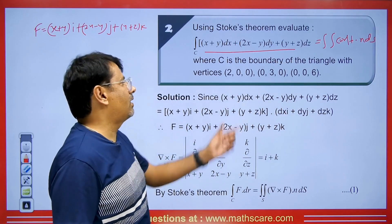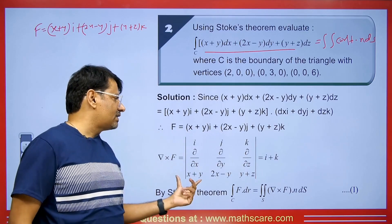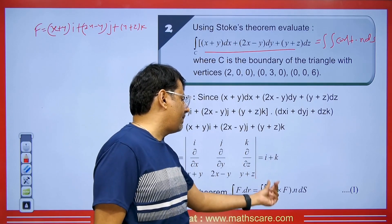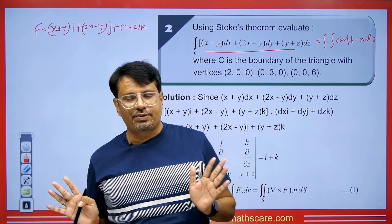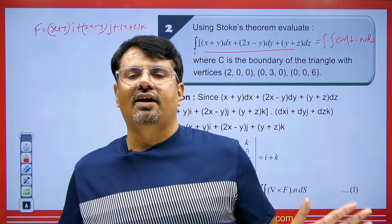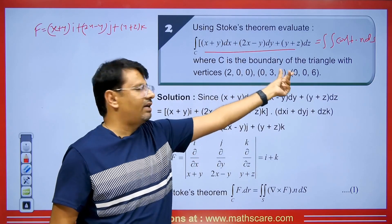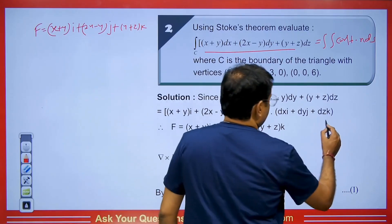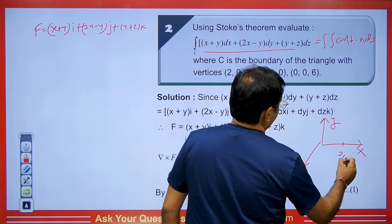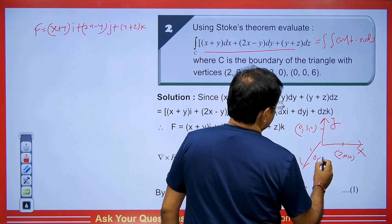We find curl f by computing the determinant of i, j, k; del/dx, del/dy, del/dz; and the components of f. The result is i + k. However, the plane is not given explicitly. Looking at the three vertices, a plane intersects the x-axis at (2,0,0), the y-axis at (0,3,0), and the z-axis at (0,0,6). The intercept form of the plane is x/2 + y/3 + z/6 = 1.